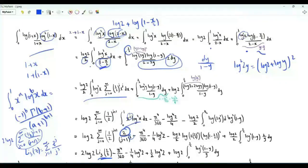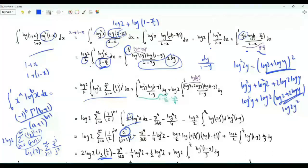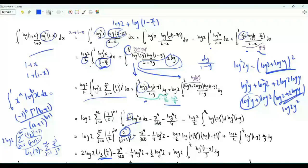Now consider the integral from 0 to 1/2. Note that log²(2y) equals log²y + log²(2) + 2 log(2)log(y), so log²(2y) = log²y plus log(2) as a common factor times (log(2) + 2 log(y)), which is log²(2y) again. We split this integral into two: one with log²y and one with log²(2y). The value of one integral is a previous result. For the other, rewrite it as -log(2)/2 times the integral from 0 to 1/2 of log²(2y) d(log²(1-y)).